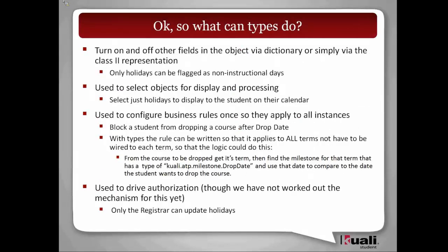Extensibility is the main thing. By taking the assumption that we have types and states on objects, it allows us to design better and cover more cases than initial designs planned for. So what does it really mean when we have a new type? An object has different fields on it.